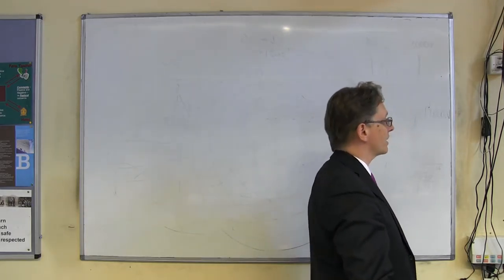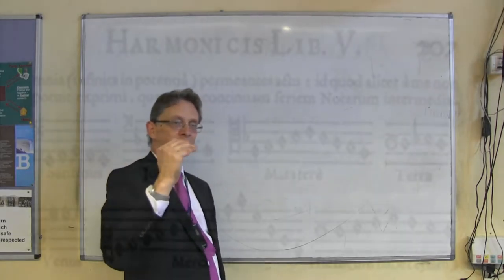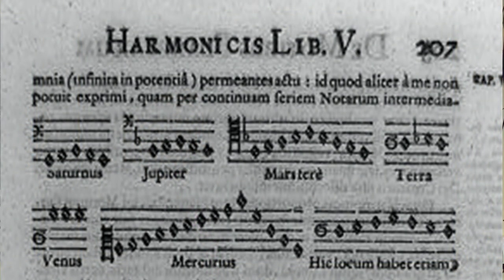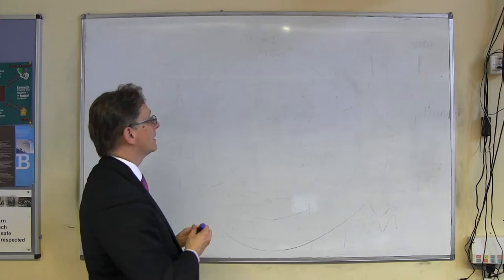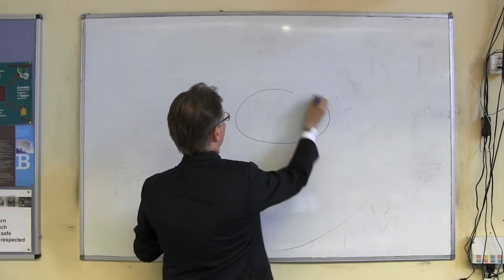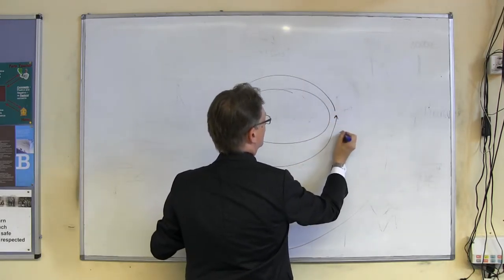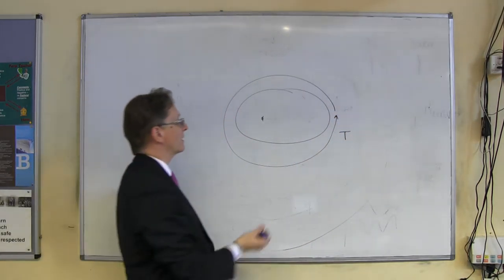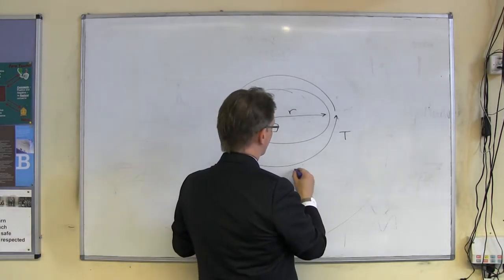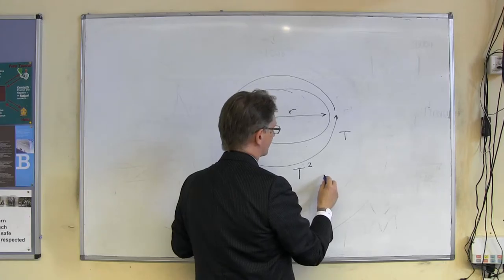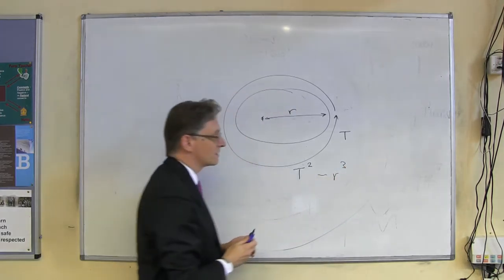Kepler tried everything — even musical scales — looking for a pattern in The Harmony of Worlds. He came across this connection: if a planet takes time T to go around and has average distance R from the Sun, then T squared is proportional to R cubed. If you were to double the radius, R cubed goes up eight times, T squared goes up eight times, which means T goes up by the square root of eight — about 2.82.